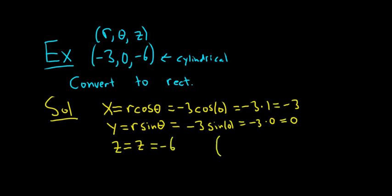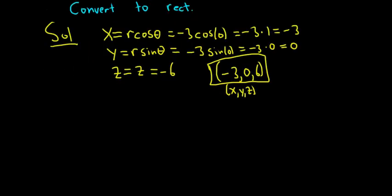So we have the exact same representation, right? (-3, 0, -6). That's our rectangular coordinate (x, y, z). Kind of an interesting example, because we end up with the same thing we start with. Does that always happen? Absolutely not. Let's do another example.